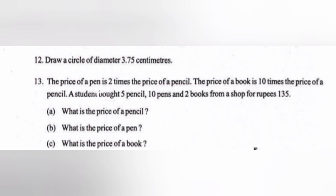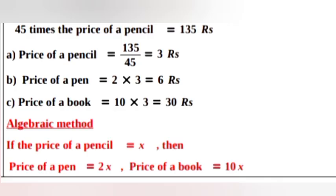13. The price of a pen is 2 times the price of a pencil. The price of a book is 10 times the price of a pencil. A student bought 5 pencils, 10 pens, and 2 books for Rs. 135. A. Price of a pencil equals 135 divided by 45 equals Rs. 3. B. Price of a pen equals 2 times 3 equals Rs. 6. C. Price of a book equals 10 times 3 equals Rs. 30.